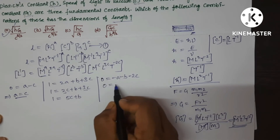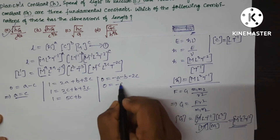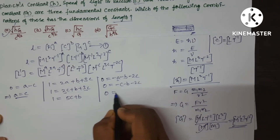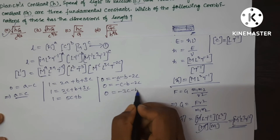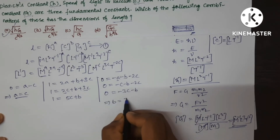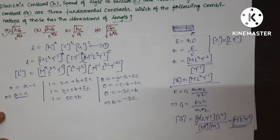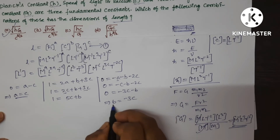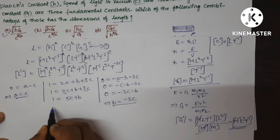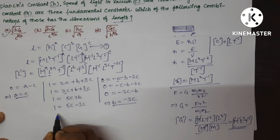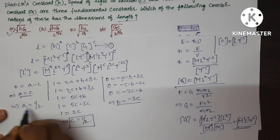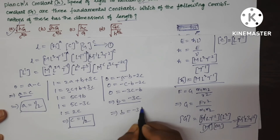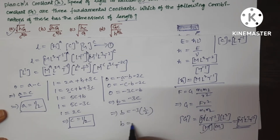Also substituting A = C into the time equation: 0 = −C − B − 2C = −3C − B, so B = −3C. Substituting B = −3C into 1 = 5C + B: 1 = 5C − 3C = 2C, giving C = 1/2. Then B = −3 × (1/2) = −3/2.